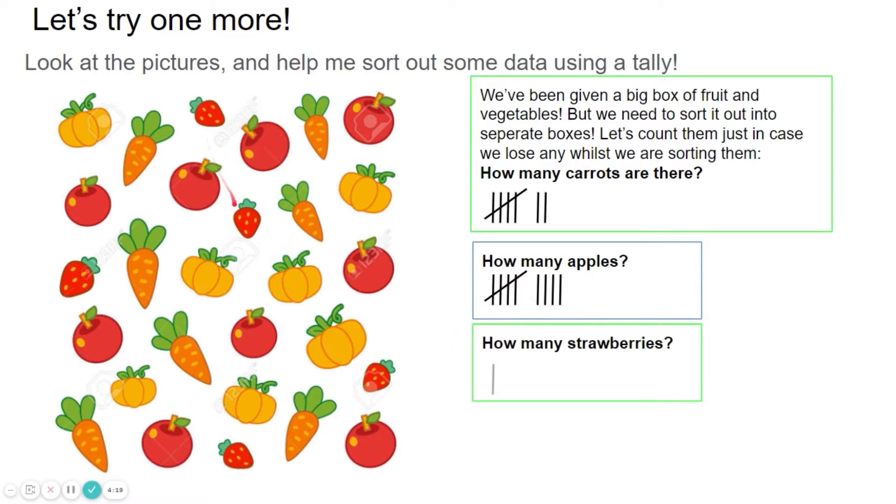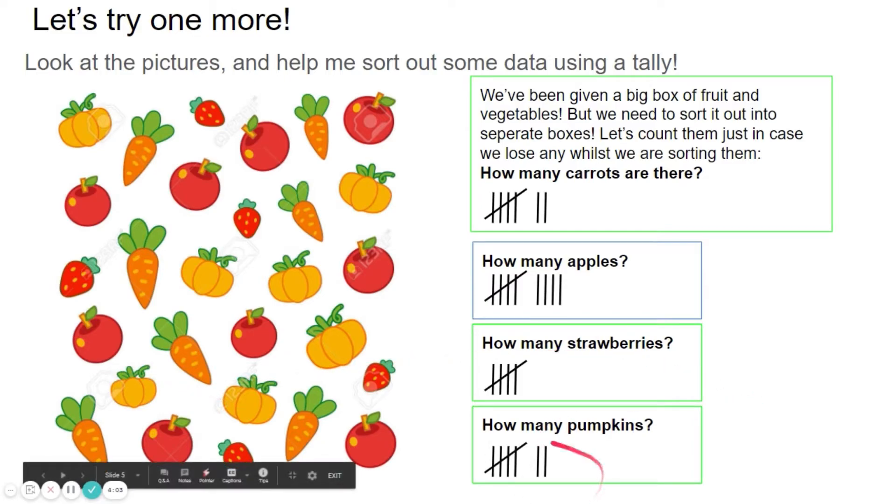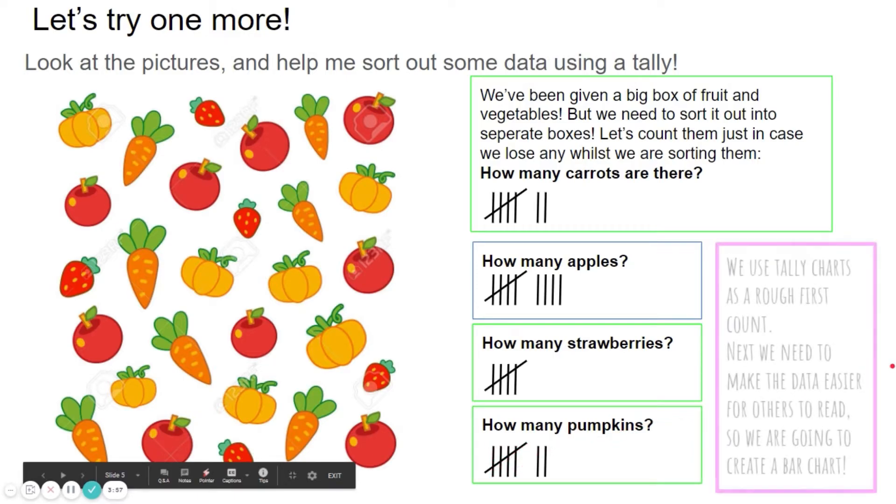Strawberries this time. One, two, three, four, five. And pumpkins. Well, I think they're pumpkins. They could be peppers. Five, six, seven. Seven pumpkins as well. So as you can see, we've got four lines and then the one across to make our gate.